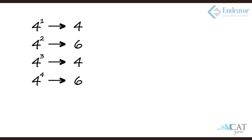Let's take slightly difficult ones. Let's take an example of 4. Now 4 to the power 1 is 4, then it's 16, then it's 64, then it's 256. So we see it's alternating in 2's: 4, 6, 4, 6.